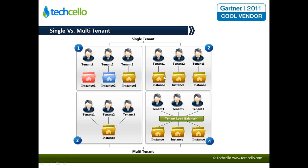Level two is slightly better in terms of maintainability — at least the source code is pretty much the same, so you're not doing specific code changes. Through configurability, you try to meet customer needs. But the more changes customers ask for, the harder it becomes to achieve in level two and you may end up going back to level one. With minimal customizations, level two might work, but when the number of customizations increases, you'll have to modify further.